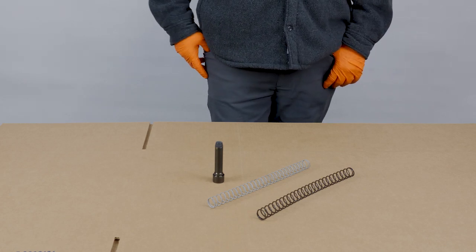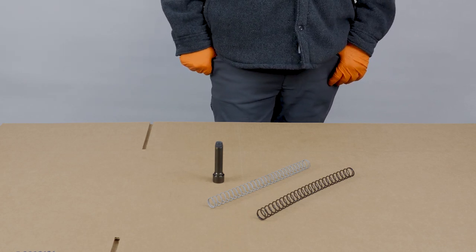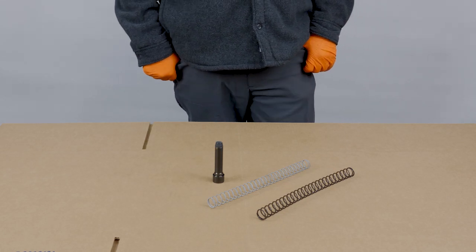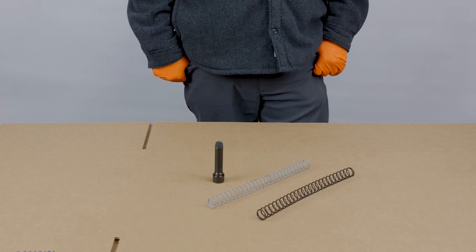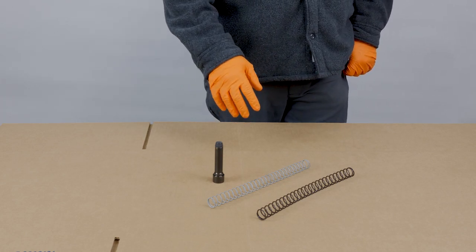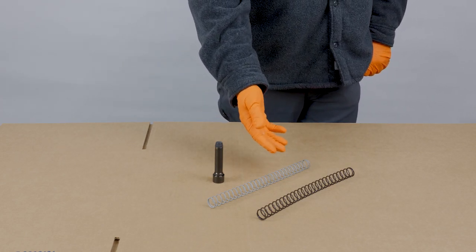The bolt moves very quickly on a blowback and you need to give the disconnector time to rotate forward to grab the hammer. You do that by giving the system mass in the form of a heavy buffer and a good recoil spring.